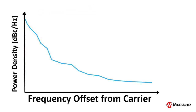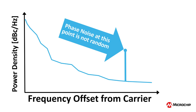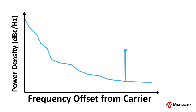Phase noise plots tend to be reasonably smooth. So what does it mean when we see narrow humps that clearly are excursions from the random noise that creates the reasonably smooth portion of the phase noise plots? It means that there is a phase noise source that is not random — in other words, there is a deterministic source of phase noise. We call these deterministic excursions spurs.